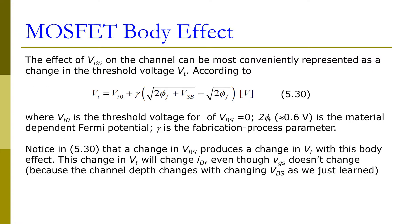The effect of this body-to-source voltage on the channel can be conveniently represented as a change in the threshold voltage according to the following equation. In this equation, Vtn0 is the threshold voltage for Vbs equals zero, when we connect the body to the source. This 2φf is about 0.6 volts, which is material-dependent and the Fermi potential.